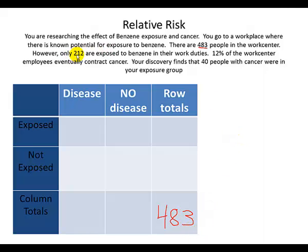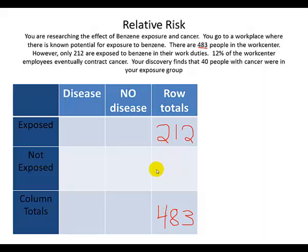Further, there were 212 people exposed to benzene in their work center, so this entire row — whether they had disease or not — equals 212 people. If we take 483 at the work center and subtract those that were exposed, we'll know the number that were not exposed: 483 minus 212 gives us 271 people. Now we know how many people were in the exposed group and how many were in the unexposed group.